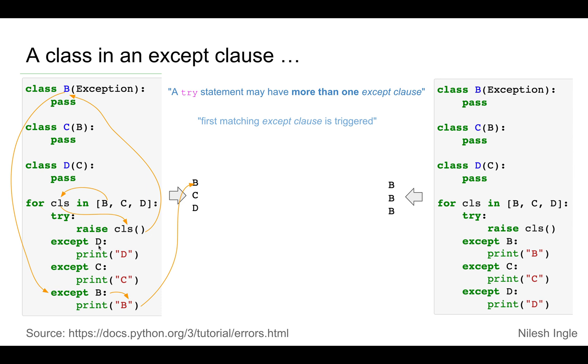It's for D, doesn't match. We look at the second except clause, it is C and it does match. And so we print the letter C in the output.